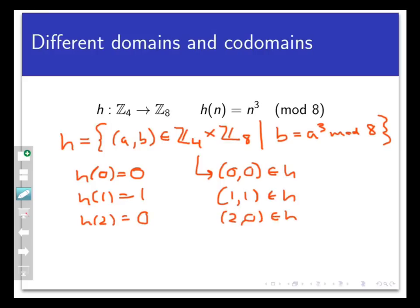And finally, since there are only four points in the domain, I only have one more to check here. If x is 3, then h of 3 is 3 cubed, which is 27 mod 8, which is 3, so 3, 3 is in h. So h would be equal to the set of ordered pairs 0, 0, 1, 1, 2, 0, and 3, 3.